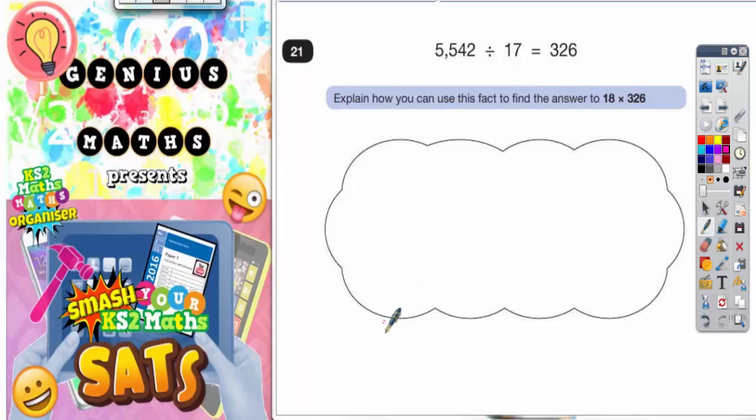Question 21. 5,542 divided by 17 equals 326. Explain how you can use this fact to find the answer to 18 multiplied by 326.